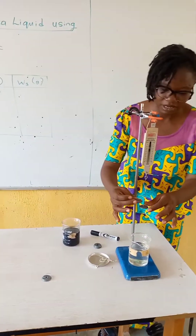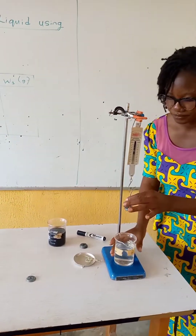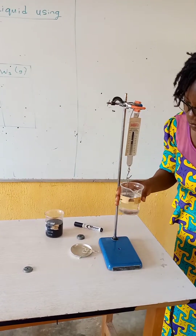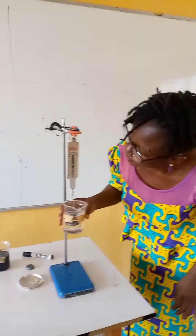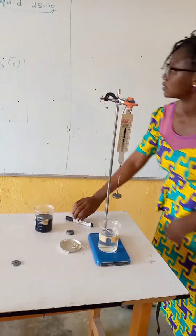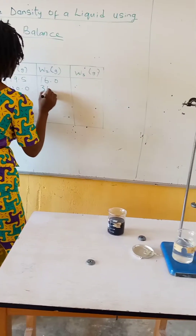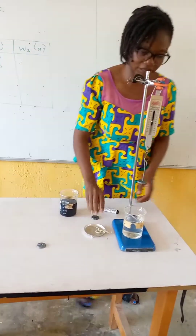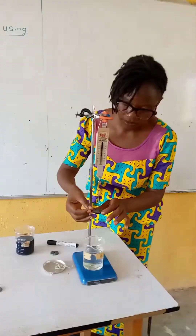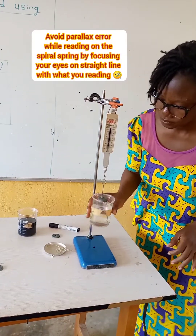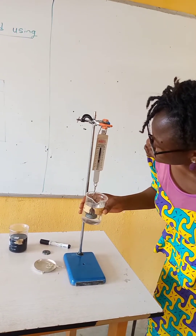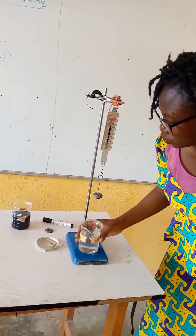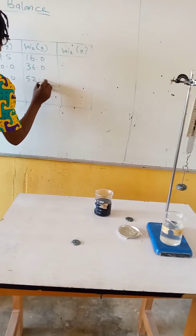We add the next mass and take a reading quickly. That gives us 36.0 grams. For the next mass, we have 52.0 grams.